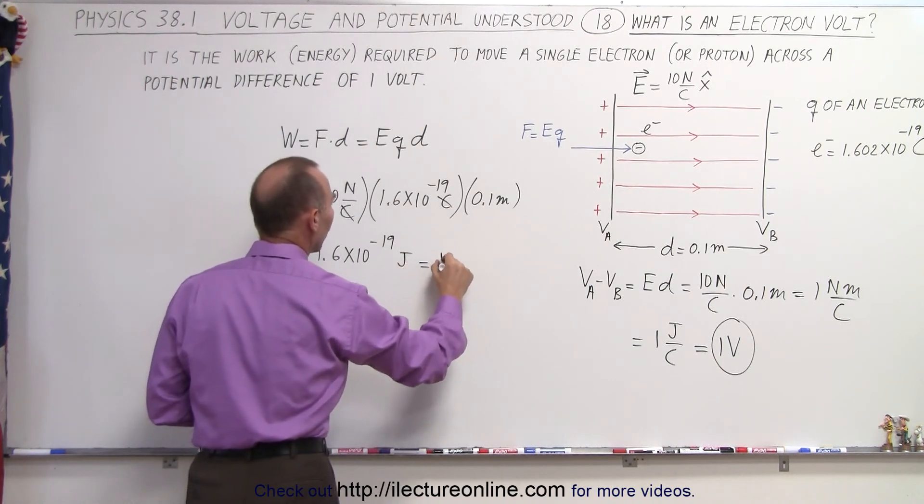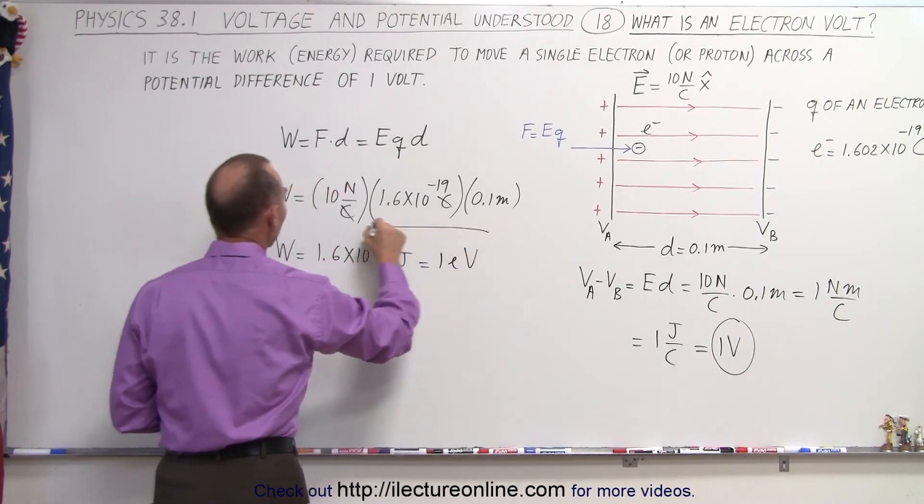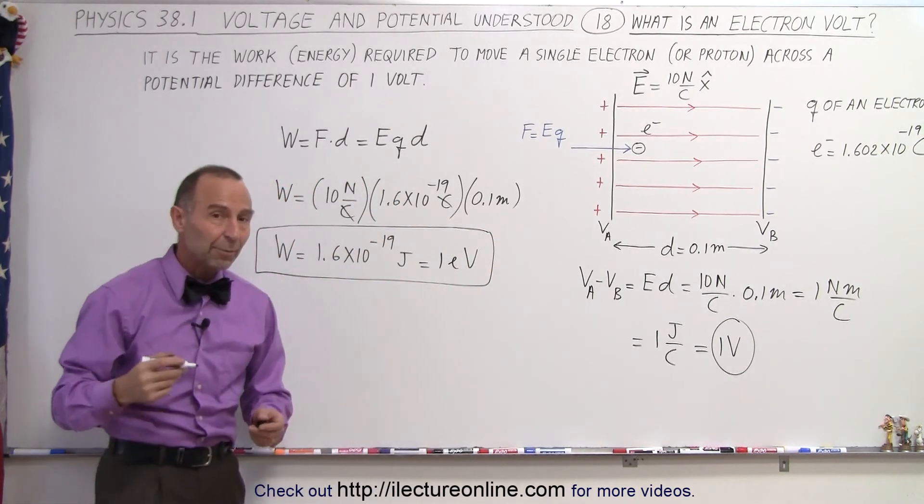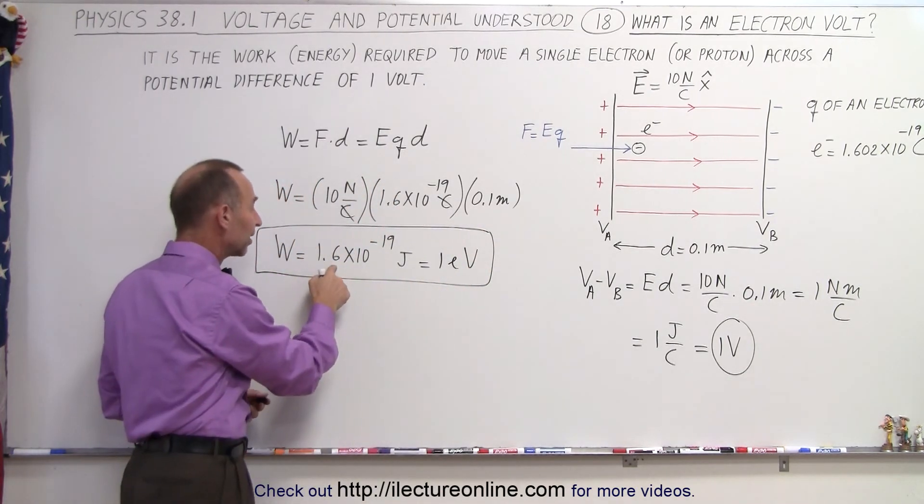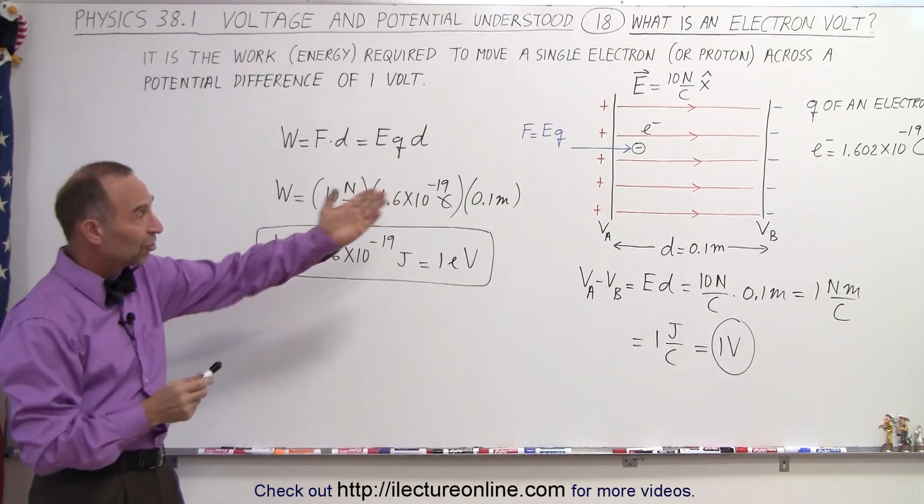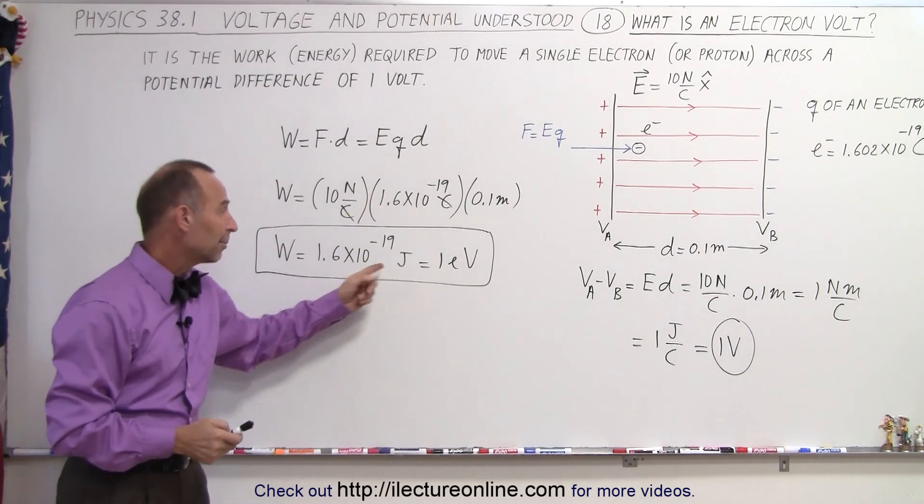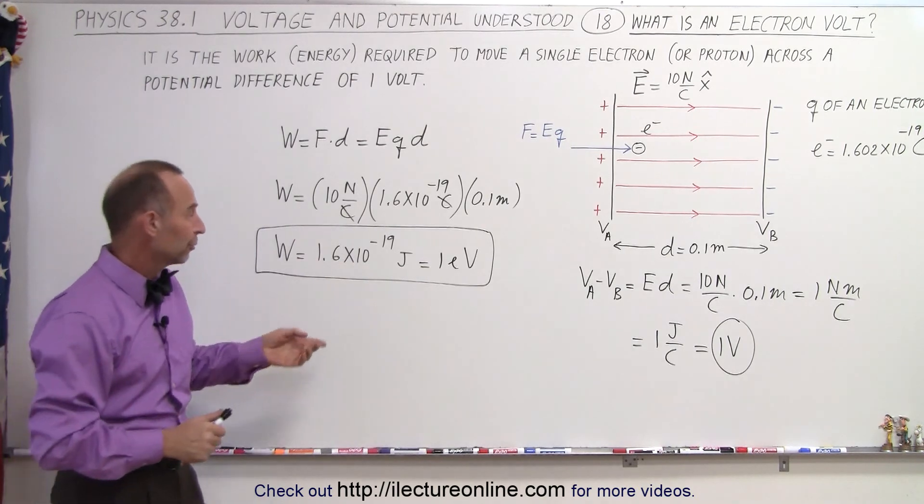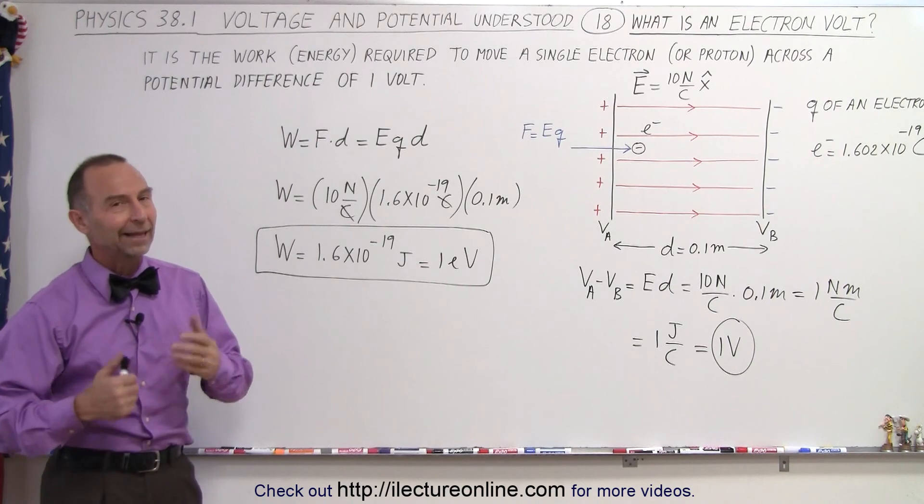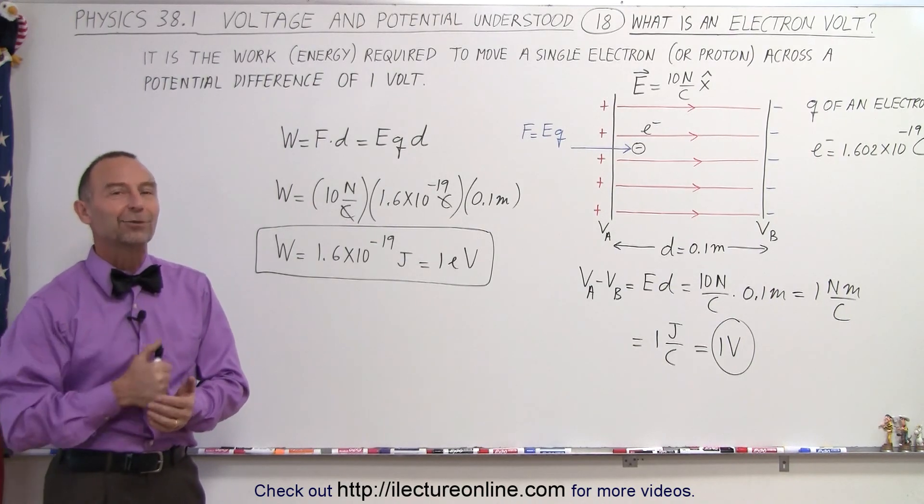And that means that this is equal to 1 electron volt by definition, which means an electron volt is the same amount of energy as 1.6 times 10 to the minus 19 joules. And that's where the definition came from, and practically in mathematical terms, that's how we convert from joules to electron volts, or from electron volts to joules. And that's what we mean by an electron volt.